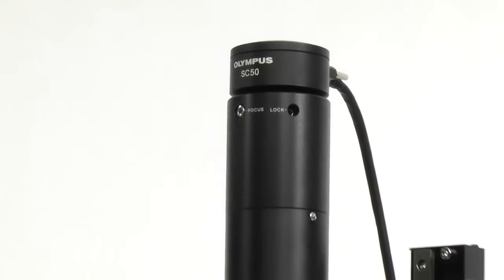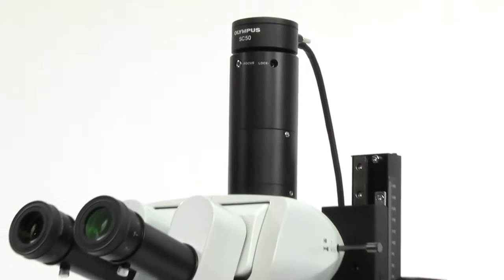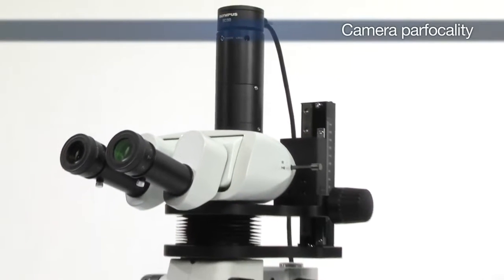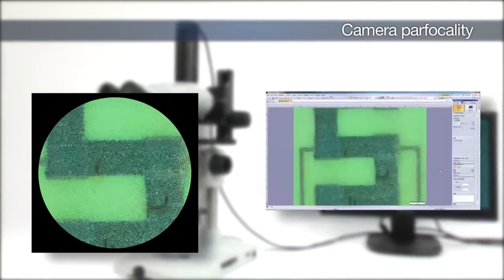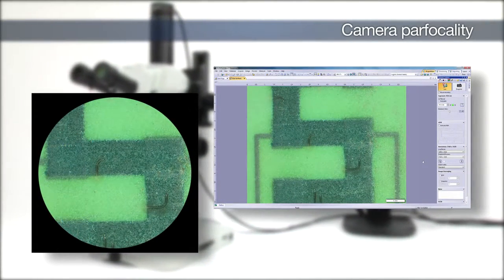For stereo microscopes equipped with digital imaging systems, proper camera parfocality is important to help ensure that the image viewed through the microscope and the image displayed on the monitor are in focus with each other.